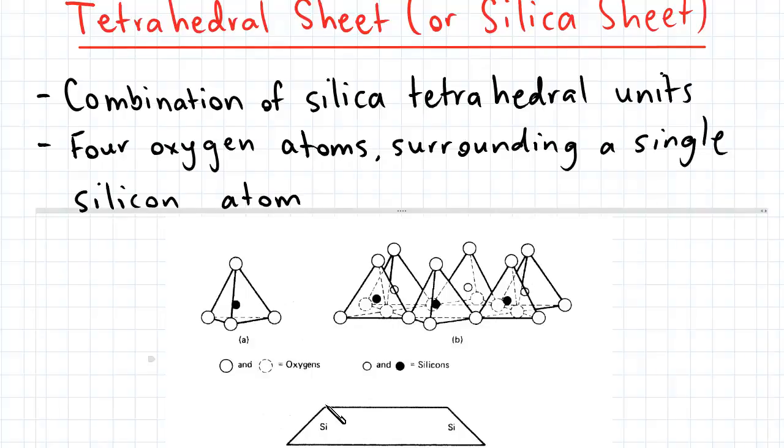Schematically, this silica sheet is represented by a trapezium for convenience. You can see in this diagram that the oxygen atoms at the base of each tetrahedron lie within the same plane, and that each oxygen atom is shared between two tetrahedrons.